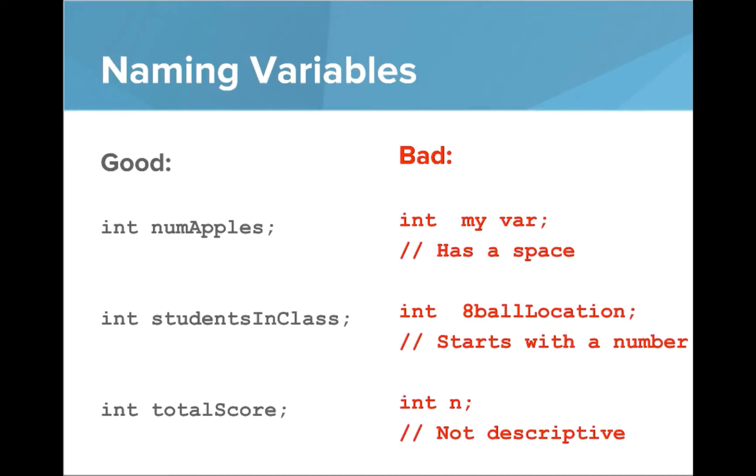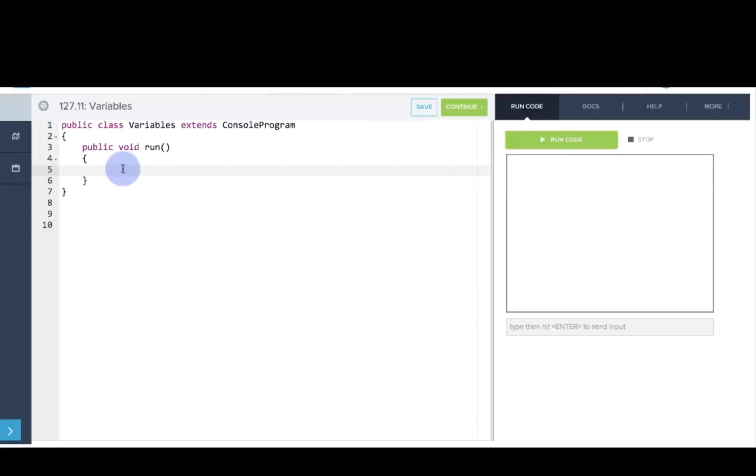So let's go into our editor and create some variables. The first variable we're going to create is a variable to store the number of snapchats that we've sent. We'll write an integer for this, so we'll say int snapchatsSent equals 352 semicolon.